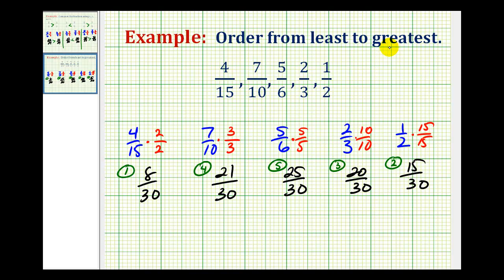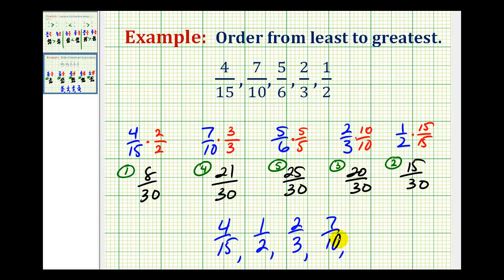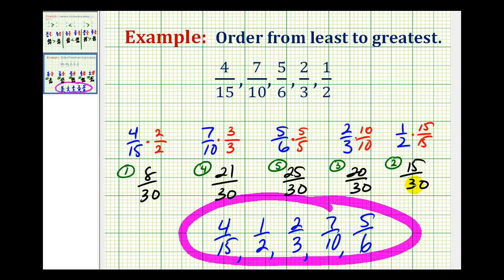But to give our final answer, we want to write the fractions in the original form. The smallest was eight thirtieths, which is four fifteenths. The next smallest was fifteen thirtieths, which is equal to one half. Next we had twenty thirtieths, which was two thirds. Next we had twenty-one thirtieths, which was seven tenths. And then the largest fraction was twenty-five thirtieths, which was equal to five sixths. So it is important that we list these fractions from least to greatest in their original form, rather than the equivalent fractions with the common denominators.